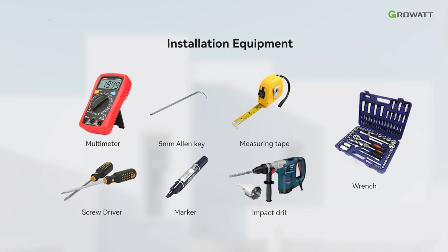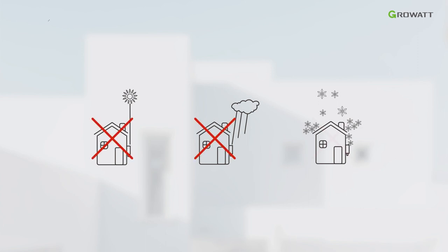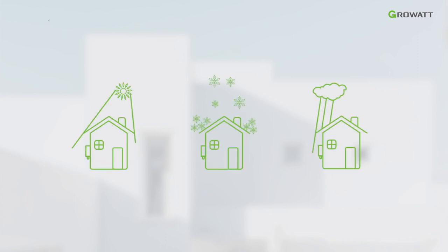Before installing, make sure you have all the required tools. The installation environment significantly impacts the machine's lifespan. Therefore, please avoid placing the ALP battery in direct sunlight, exposed to moisture, or in snowy conditions. We recommend installing the battery in a shelter location.